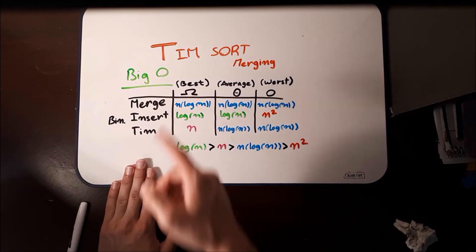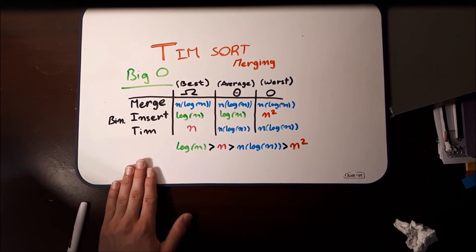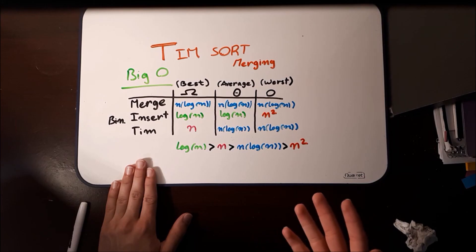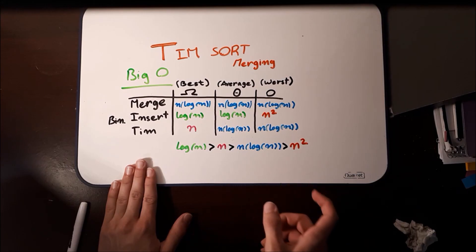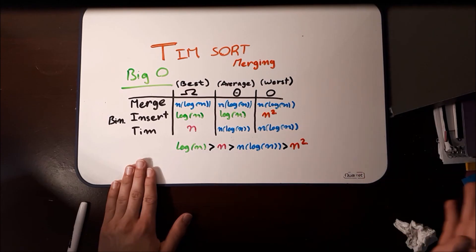Then, for merging, the reason that TIMSORT's best is better than just merging is because of the runs and the galloping. So with the runs, you remember that we skipped a lot of the steps for merge sort. And with galloping, again, it just makes it faster because after seven elements, or that's the default, it'll just take a whole lot of elements and copy them just in a chunk. That's why it's so much faster.